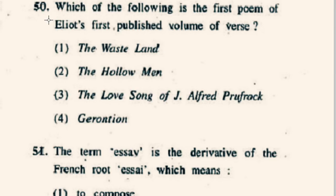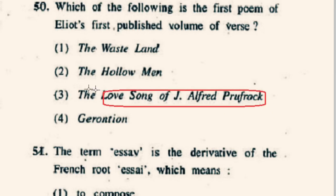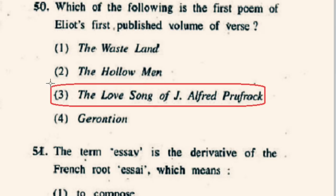Question number 50: Which of the following is the first poem of Eliot's first published volume of works? The Love Song of J. Alfred Prufrock, commonly known as Prufrock, is the first professionally published poem by American-born British poet T.S. Eliot. So option 3rd, The Love Song of J. Alfred Prufrock, will be the correct option.